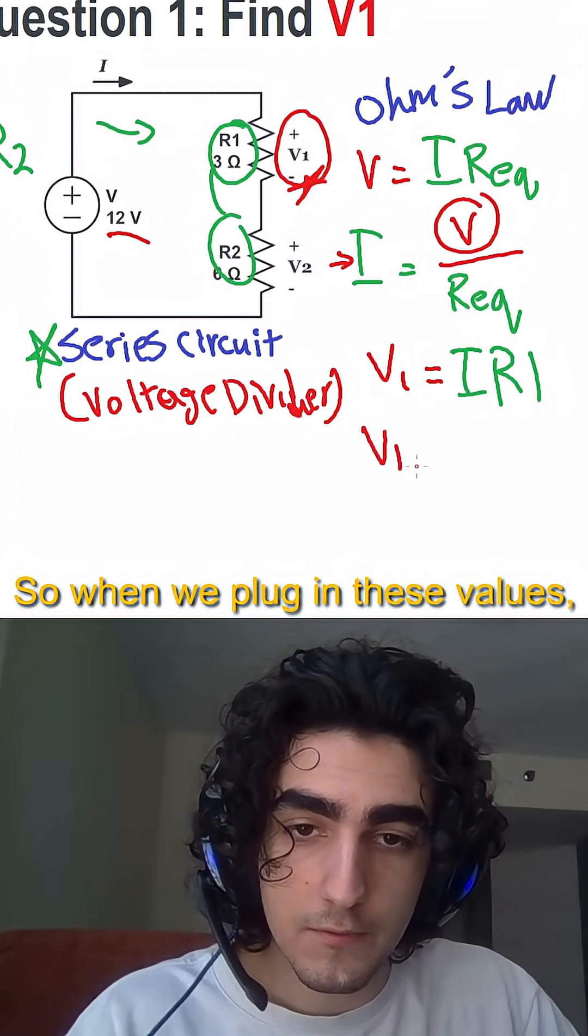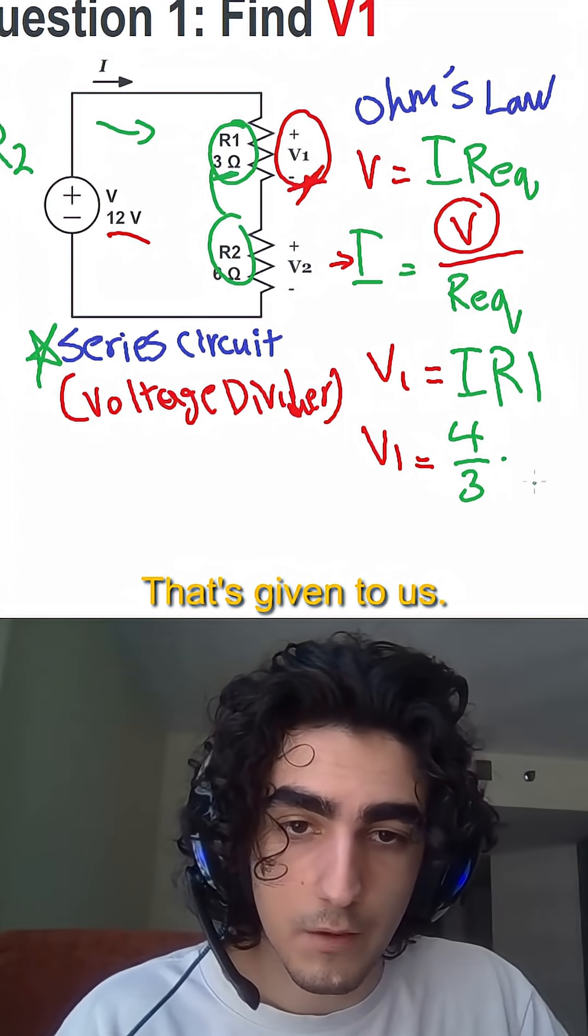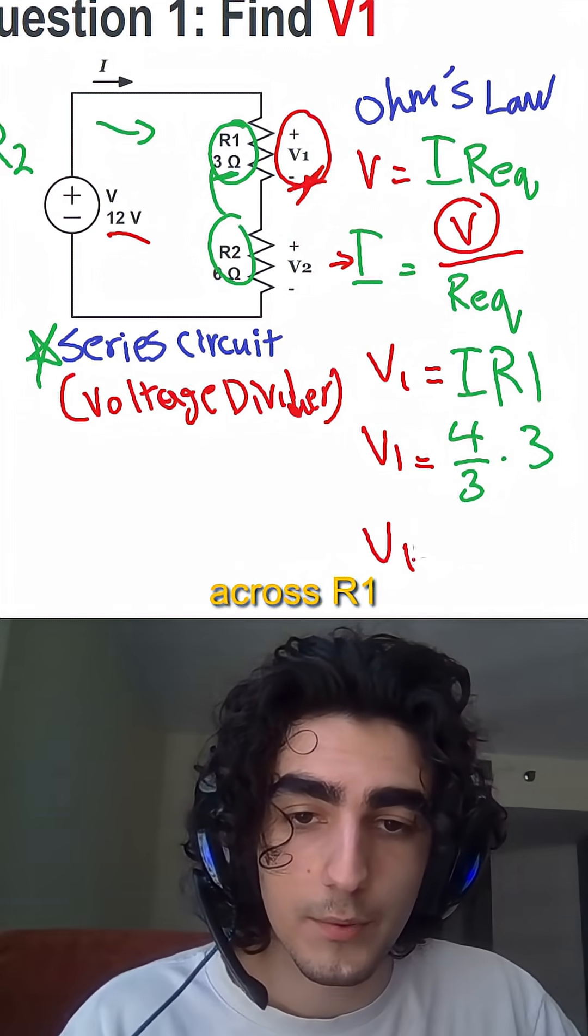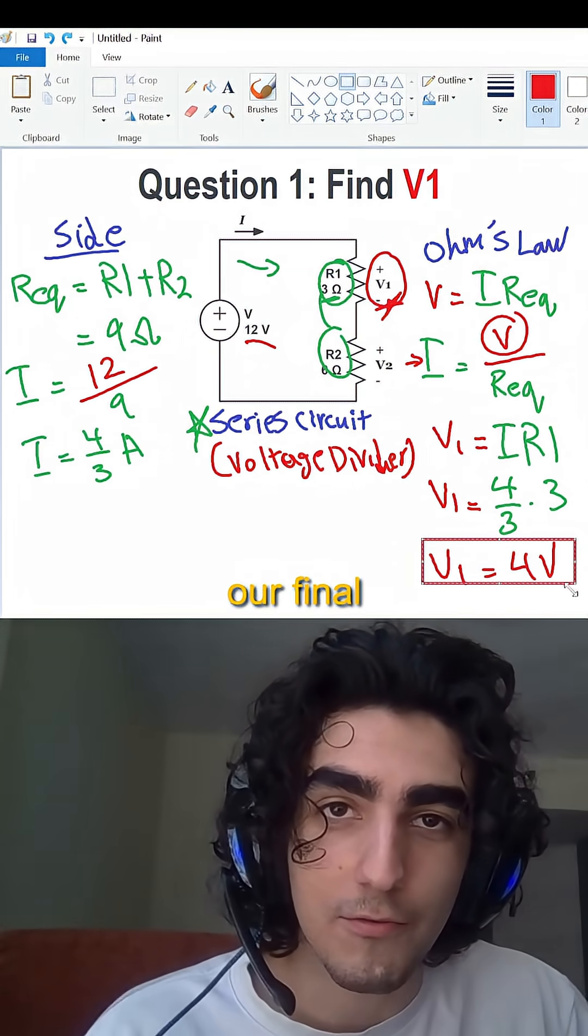So when we plug in these values, we get 4 over 3 amps times 3 ohms that's given to us, which means that the voltage drop across R1 is equal to 4 volts. And that is our final answer.